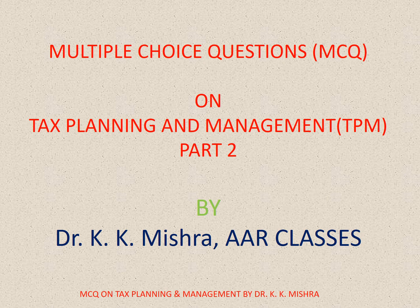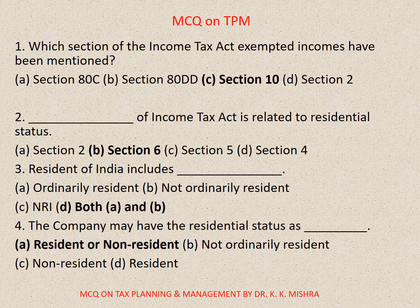Now come to the question. Question number 1: Which section of the Income Tax Act are exempted incomes mentioned? Options are A. Section 80C, B. Section 80DD, C. Section 10, D. Section 2. The correct answer is C. Section 10.